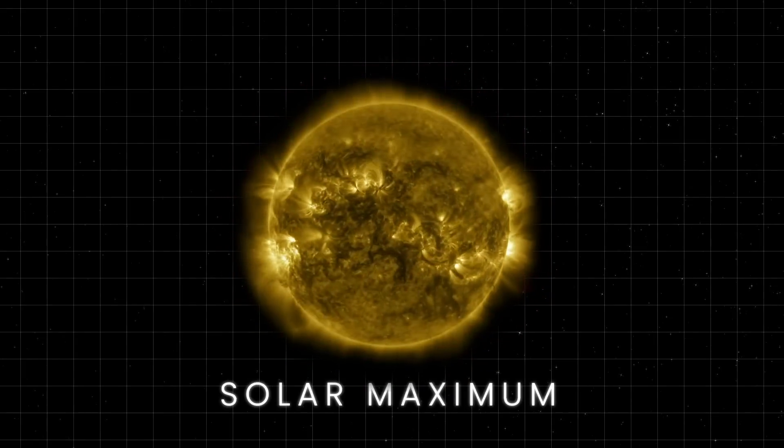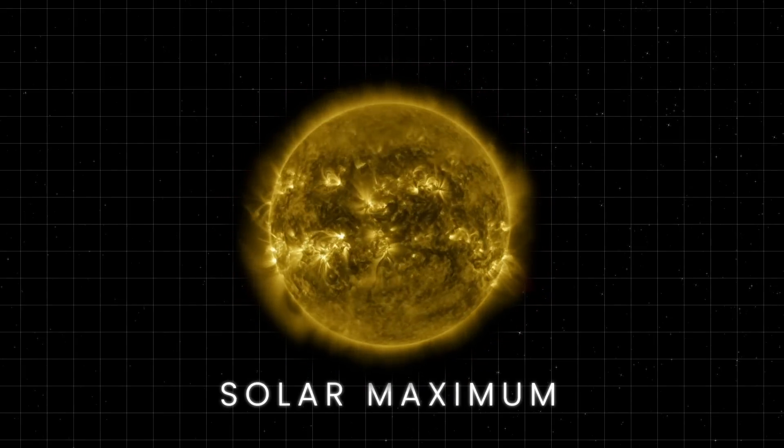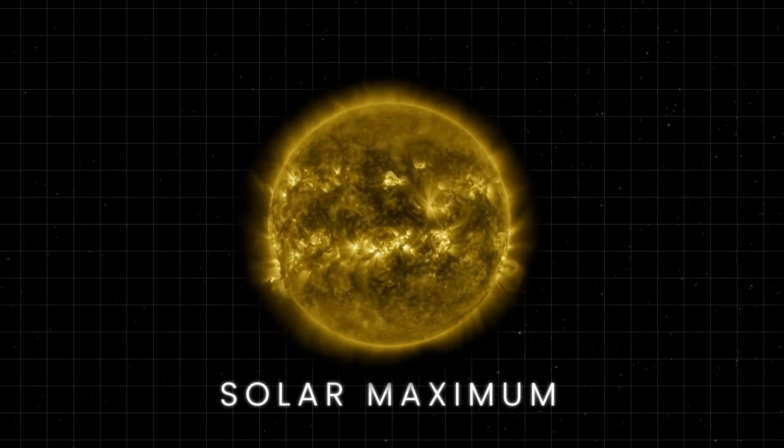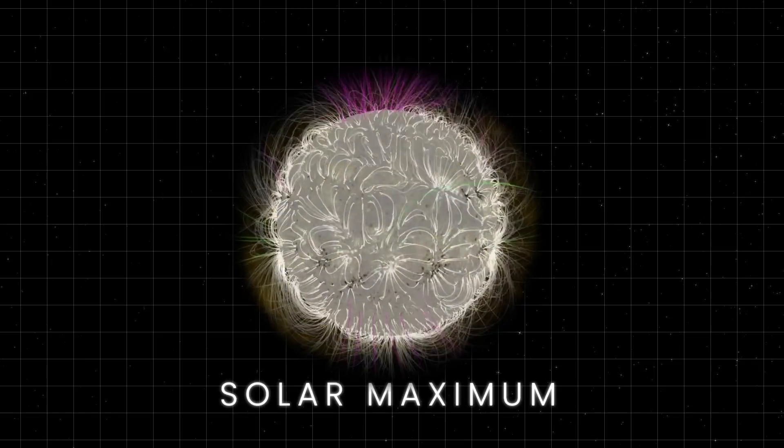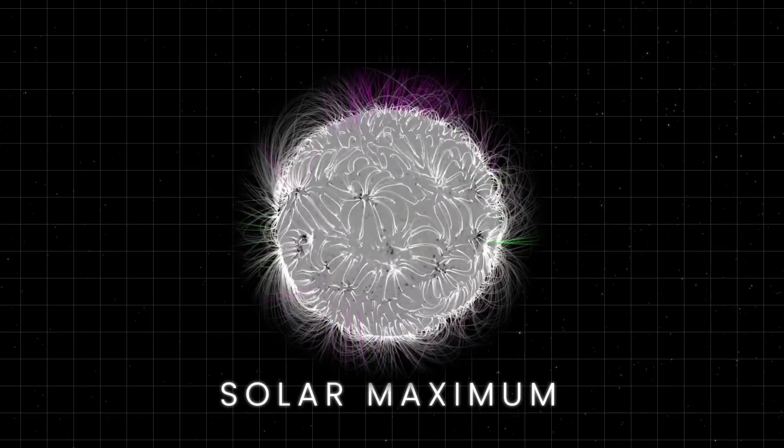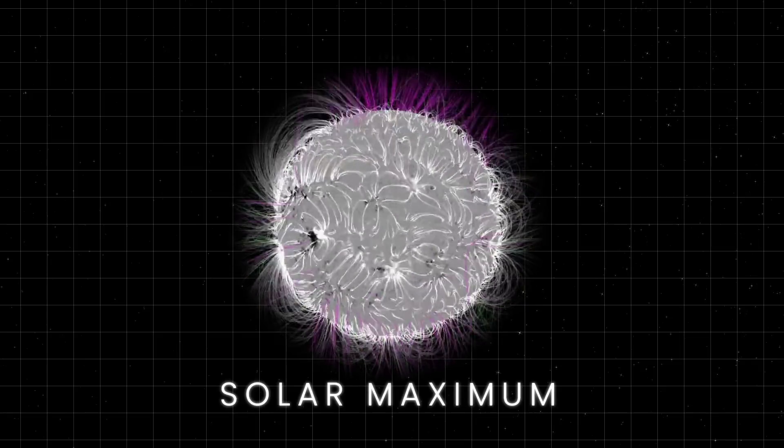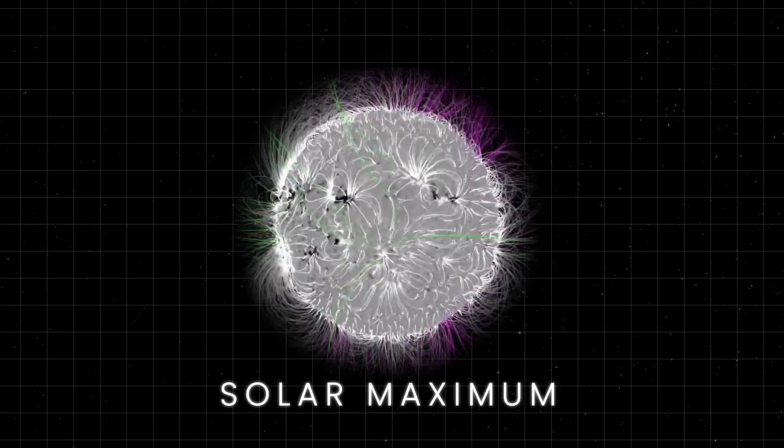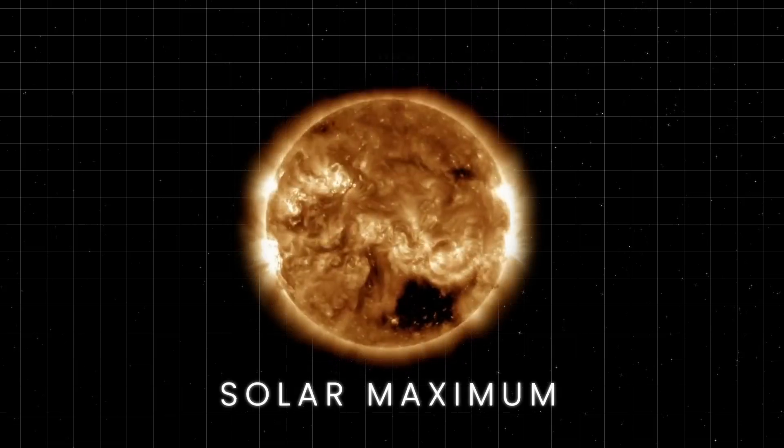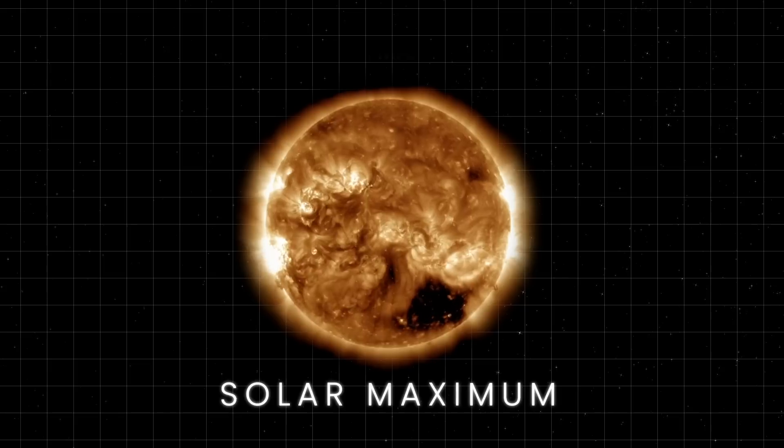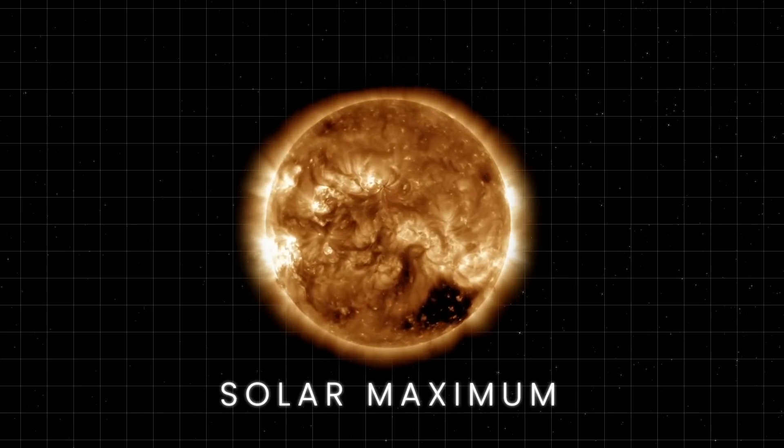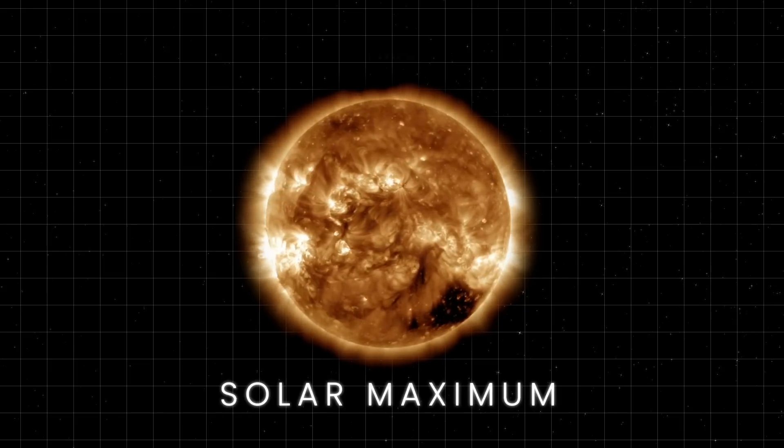As solar maximum wanes, the magnetic field begins to reorganize itself. The twisted and tangled magnetic field lines reconnect and the global magnetic field gradually reverses its polarity. The north magnetic pole becomes the south magnetic pole and vice versa. This process is facilitated by the migration and cancellation of opposite magnetic flux regions.